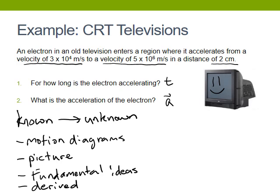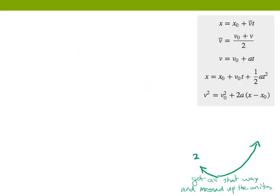Setting up a problem is the hardest part, so I'm going to walk you through this first example. We have this electron and it's being accelerated. If we were to draw the motion diagram of the electron, it starts at a time with a velocity and begins to be accelerated, so it begins to speed up, moving faster and faster. Looking at this, you can see that there is an acceleration in this direction, and we'll choose that to be our positive direction, giving us a positive acceleration.